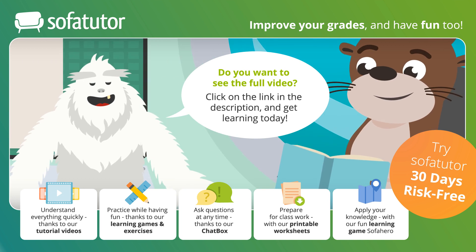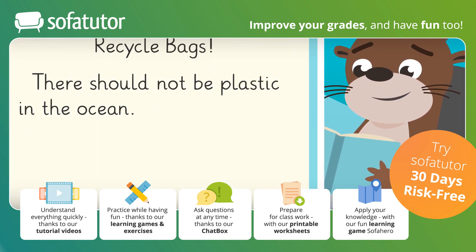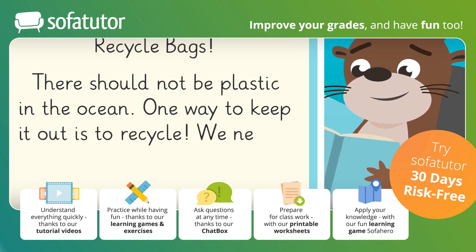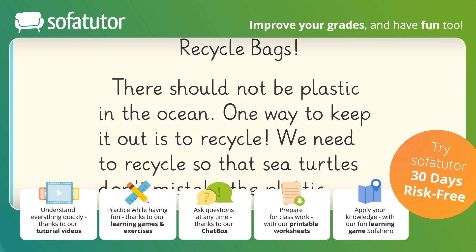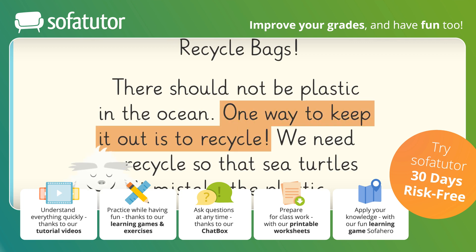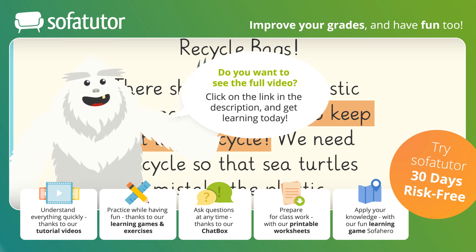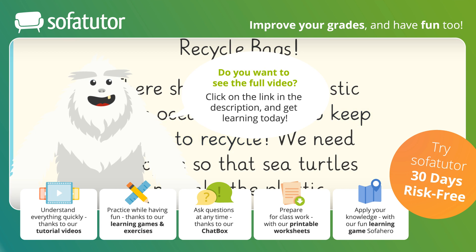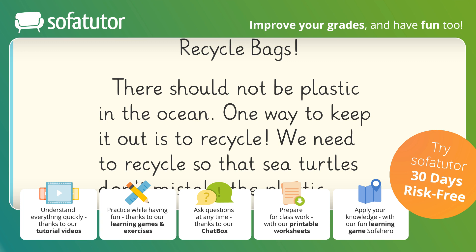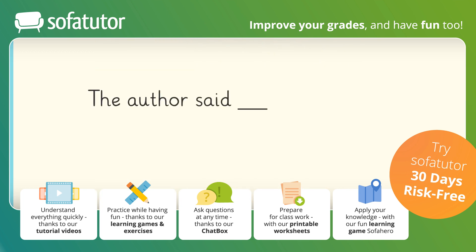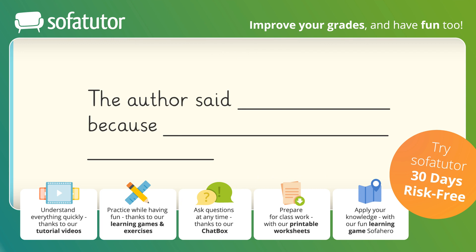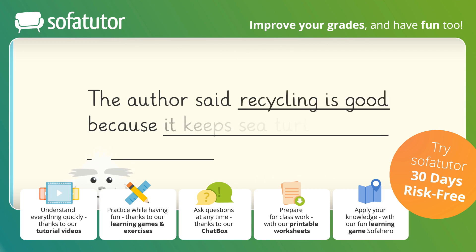Now, let's help Otis. There should not be plastic in the ocean. One way to keep it out is to recycle. We need to recycle so that sea turtles don't mistake the plastic for food. What is the author's purpose or idea? Start by finding the author's idea. Here, it is that recycling is a good way to keep plastic out of the ocean. Can you find a reason to support the author's idea? Look for clue words like should or need. We need to recycle so that sea turtles don't eat the plastic in the ocean. Finally, say the author's purpose or reason for writing: The author said recycling is good because it keeps sea turtles from eating plastic.